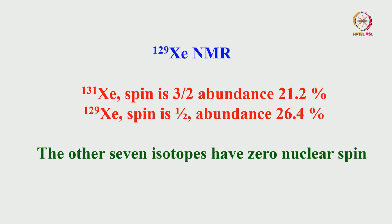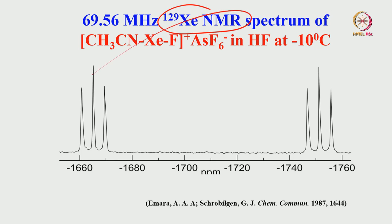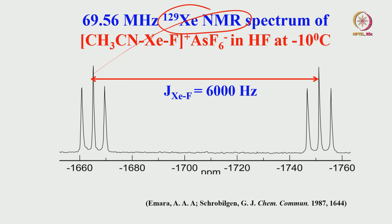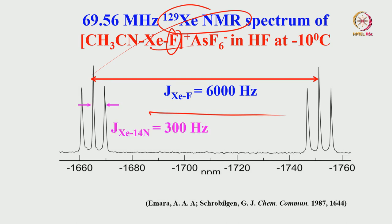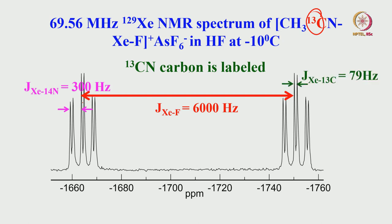Xenon NMR: Xe-131 is spin-3/2 with 21% abundance; Xe-129 is spin-half with 26.4% abundance, plus seven other isotopes. In the xenon NMR spectrum of XeF3CN, the one-bond xenon-fluorine coupling is 6000 Hz — a very large coupling. Each line is further split by nitrogen-14 coupling (spin-1) into three lines of equal intensity at about 300 Hz. If the system is labeled with C-13, each line of the nitrogen-14 triplet is further split into a doublet by carbon-xenon coupling of 700 Hz.